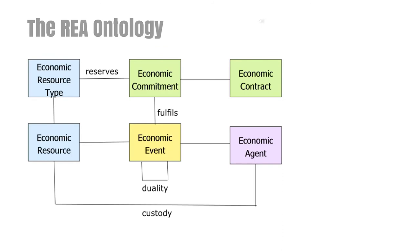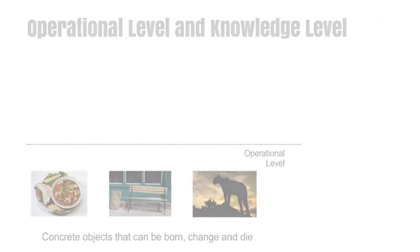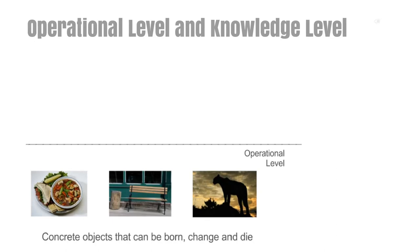We also have that an economic commitment reserves an economic resource type. Before explaining this, we will make a short digression. We will make a distinction between different kinds of objects, distinguishing between two levels: the operational level and the knowledge level. On the operational level, we have concrete, tangible objects — objects that are born, that change, that die, objects that you can see and touch. Examples could be food, furniture, and animals. These are the objects you will find in the physical world.